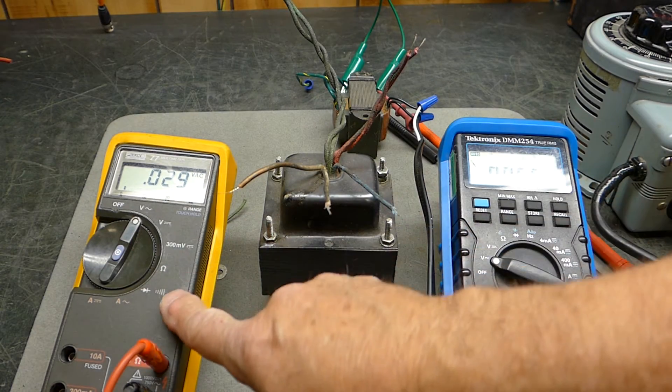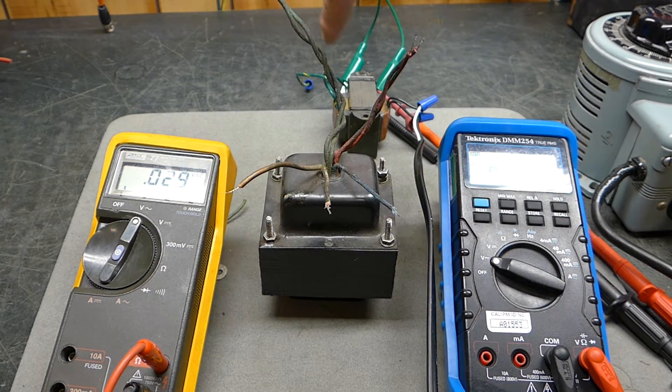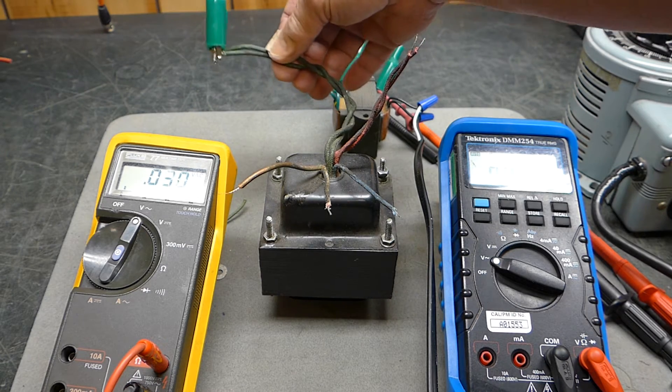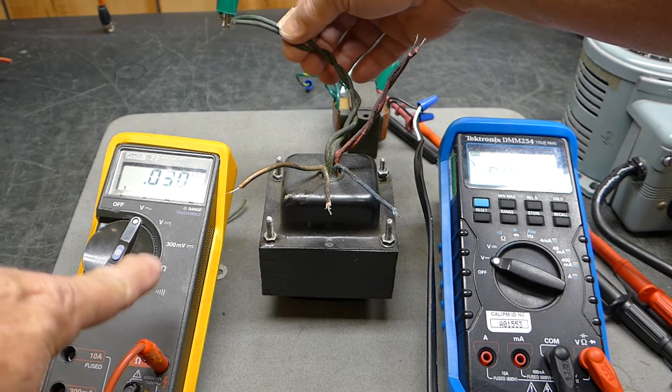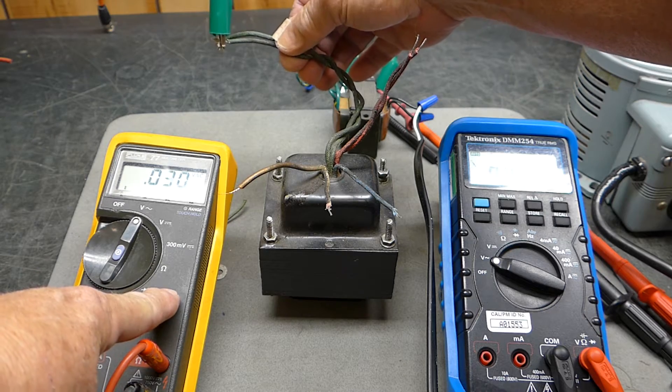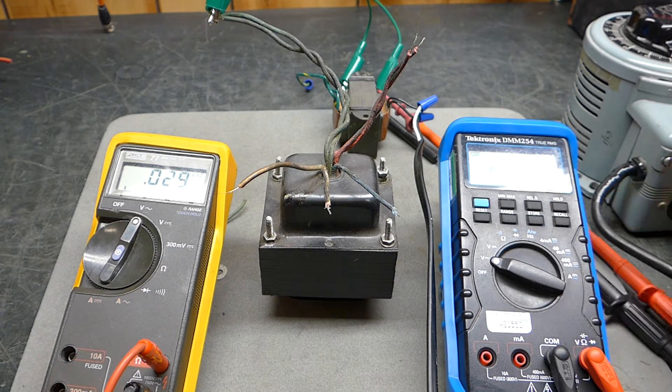This meter is looking across the 6-volt winding right here. The Fluke is connected here, and the Tektronix is going to be the one right here.